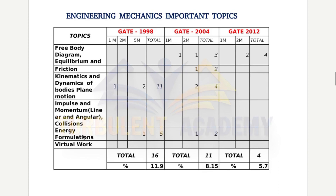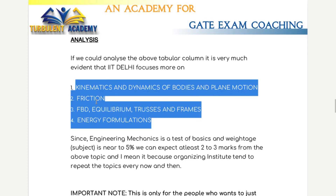Summing up, concentrate on these four topics: kinematics and dynamics of bodies in plane motion, friction, equilibrium and trusses, and energy formulations. If you focus on just these four topics, you should be able to get at least two to three marks. Since engineering mechanics is worth about 5% — roughly four marks — getting two to three from it is very achievable.